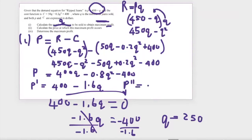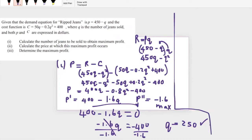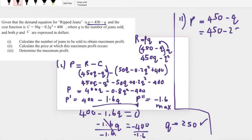So the answer to part one is 250 jeans. To confirm this is a maximum, we differentiate π' one more time and get a negative value, confirming maximum profit. For part two, we calculate the price at which maximum profit occurs using the price function P = 450 minus Q, substituting Q = 250: P = 450 minus 250 = $200. So the price at maximum profit is $200.